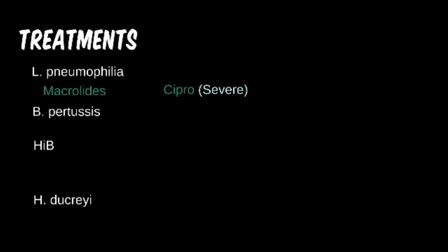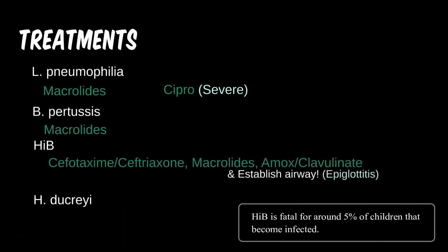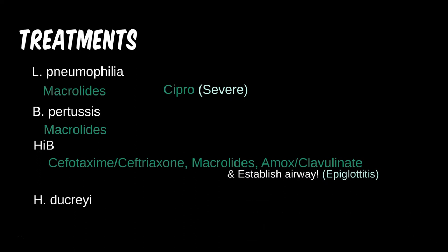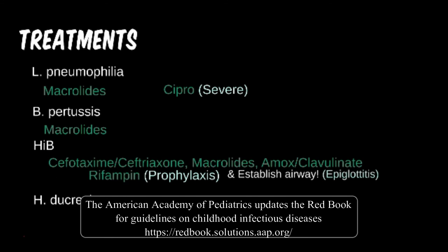HIB is another that is almost always vaccinated against in the US, making treatment questions more rare. It is still susceptible to some beta-lactam antibiotics like cephalosporins, and we can add a beta-lactamase inhibitor for added coverage. Rifampin is also used to prophylact family members and other close contacts. Unless the question is regarding tuberculosis or prophylaxis, rifampin is almost always the wrong answer — this is one of those exceptions.